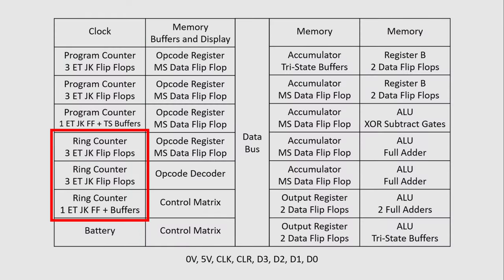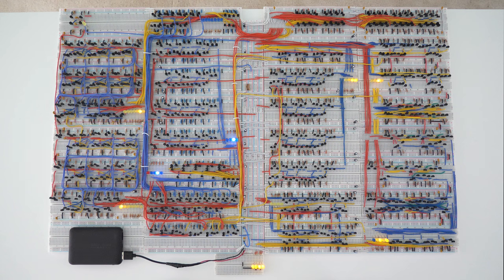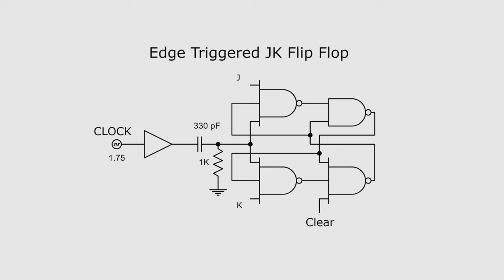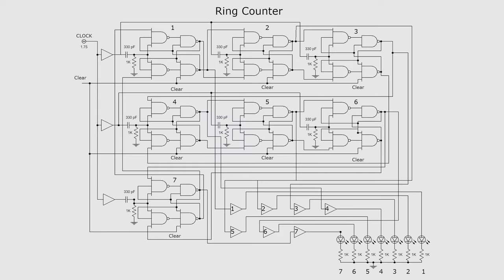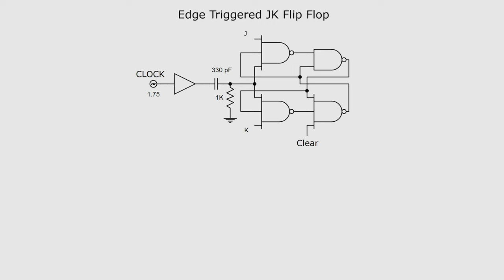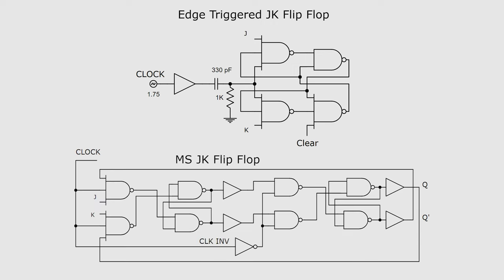Next, let's talk about the ring counter. The 7-stage ring counter is built with 7 edge-triggered JK flip-flops. The triggers for each flip-flop use a small capacitor. Here is a diagram showing one JK flip-flop, and here is a diagram showing how the flip-flops are connected. All of the flip-flops are connected to buffers to allow information to be sent to other circuits.